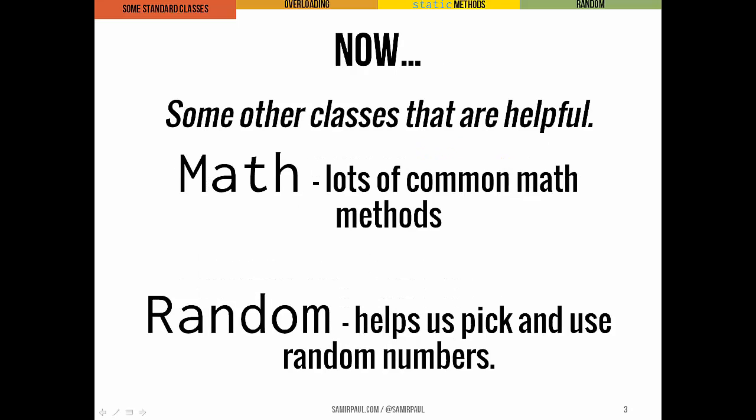Here are two classes that we're going to find really useful going forward. First is the Math class, and that just has lots of helpful math stuff like absolute value, exponentiation, square roots. And then there's the Random class, which allows us to define random objects, and those we can use to pick random numbers.